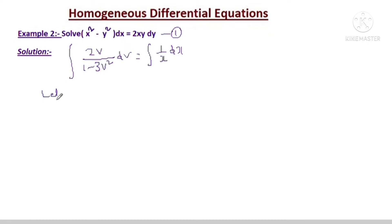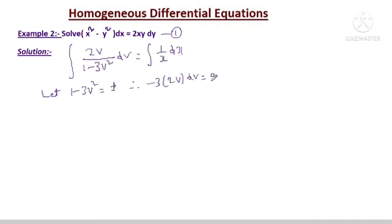Let 1 - 3v² = t. Therefore, -3 · 2v dv = dt. This implies 2v dv = -1/3 dt. Let us call this equation 3.